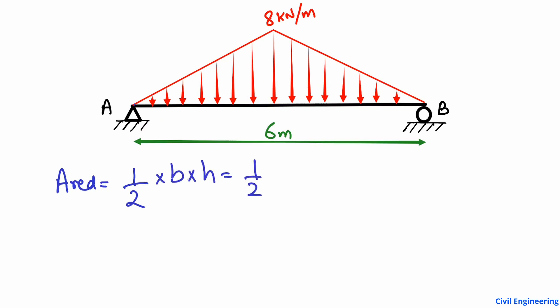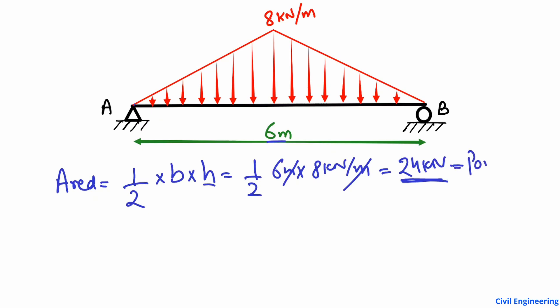In this case the base is 6 meters, multiplied by the height which is 8 kilonewtons per meter. The meter units cancel, and multiplying gives us 24 kilonewtons. So this is the area of the load, which represents the equivalent concentrated load.